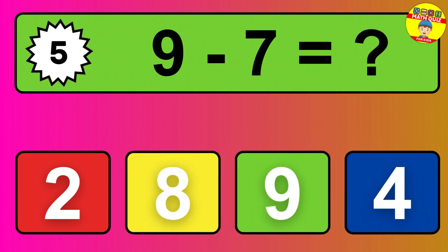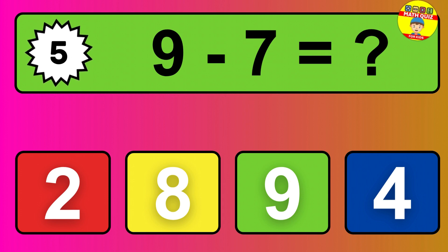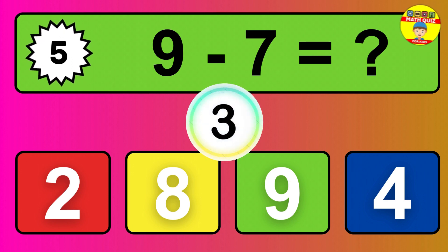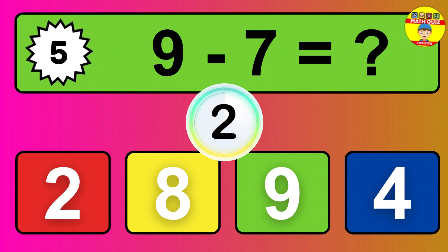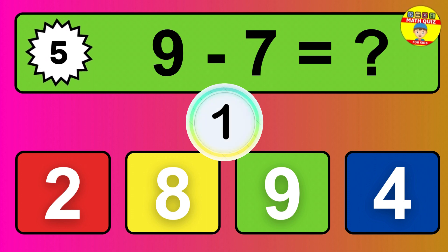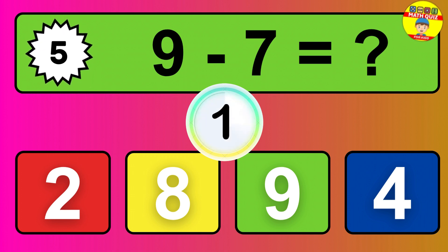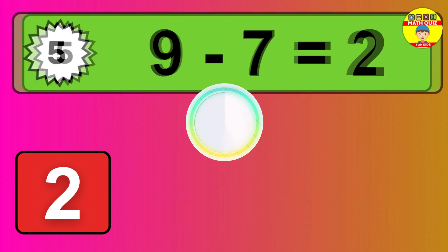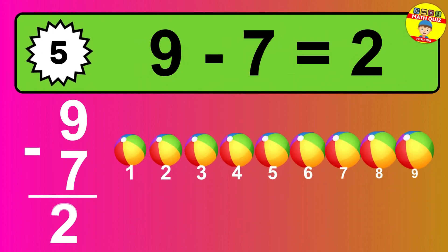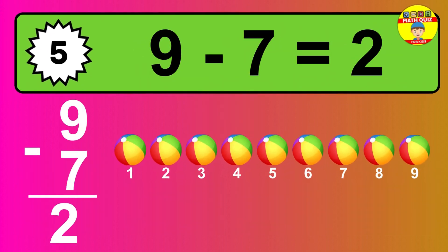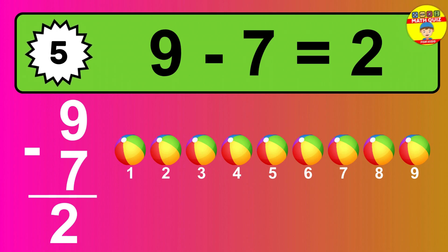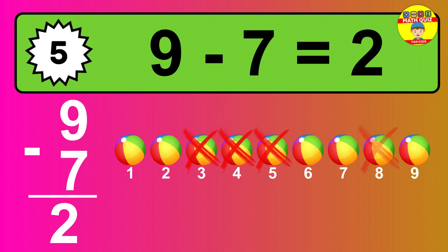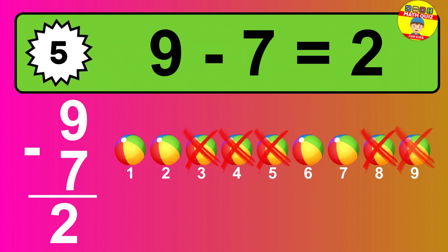Question 5: 9 minus 7 equals what? The answer is 9 minus 7 is 2. Let's count it: 1, 2.